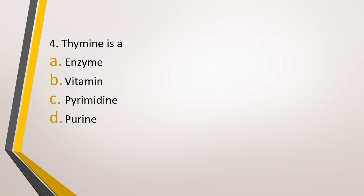Question number 4. Thymine is a: option A, enzyme; option B, vitamin; option C, pyrimidine; option D, purine. The correct answer is option C, that is pyrimidine. The three pyrimidines are thymine, uracil, and cytosine. The two purines are adenine and guanine.